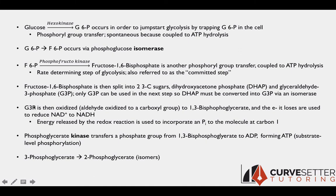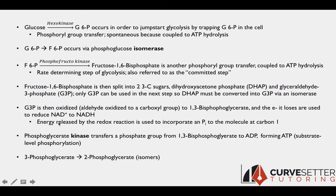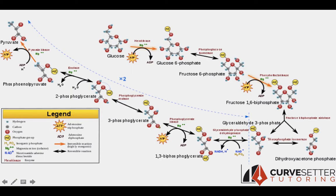In the next step, glyceraldehyde-3-phosphate is oxidized — specifically, an aldehyde of the molecule is oxidized to a carboxyl group. Because the molecule is oxidized, some other molecule must be reduced. The molecule that's reduced is NAD+, which becomes NADH — our electron carrier molecule. Energy released by the redox reaction is also used to incorporate an inorganic phosphate group into the molecule, not explicitly requiring ATP because it uses a free-floating phosphate group.